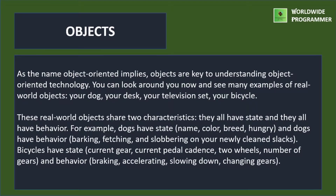In objects, as the name object-oriented implies, objects are key to understanding object-oriented technology. You can look around you now and see many examples of real-world objects — like your dog, your desk, your television set, your bicycle. These real-world objects share two characteristics: they all have state and they all have behavior. For example, a dog has state like name, color, breed, and hungry, and behavior like barking, accelerating, slowing down, and changing gears.